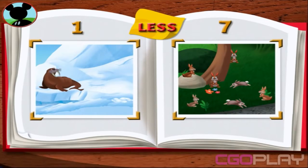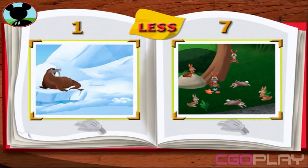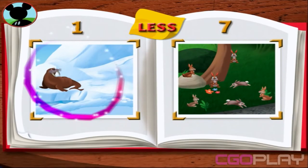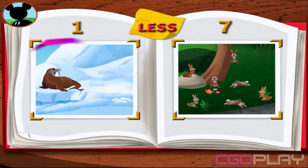I had so many great pictures. Draw a circle around the group that shows less animals than the other. There are less walruses than rabbits. Hot dog! Would you help Mickey with another one?